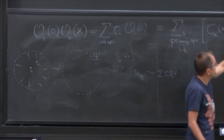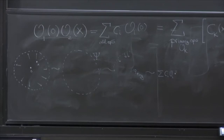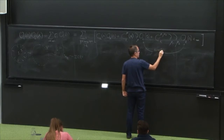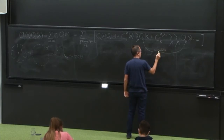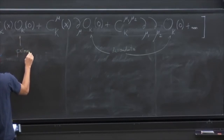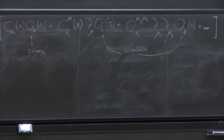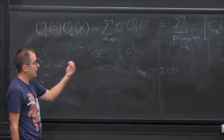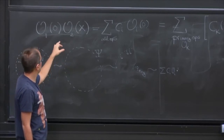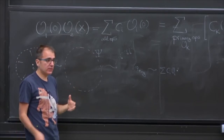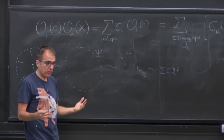We know that two operators we can write as a sum of all possible operators of the theory put at the origin. But the operators can either be derivatives of someone else or not — they can be primaries or descendants. Primaries are the ones that are not derivatives of something else. So I can sum only over the primaries and then put the derivatives explicitly there. This is the primary, and all these guys are the descendants. Now let me make just one more comment. This is an expansion — we replace an operator for any X, and someone asked: what's the radius of convergence of this expansion?